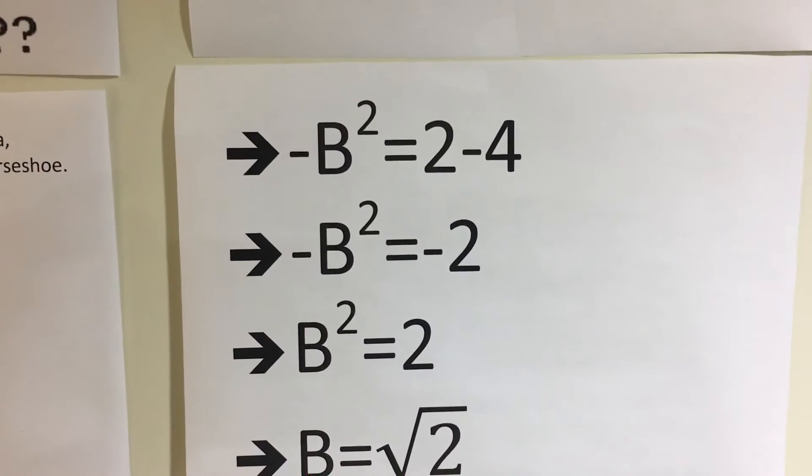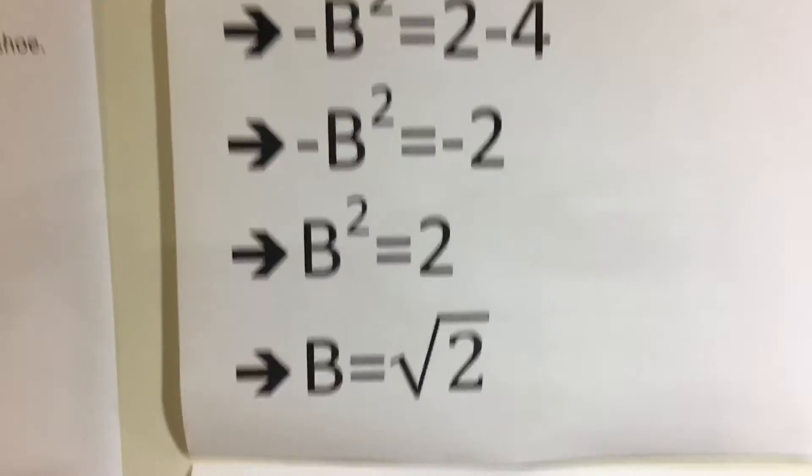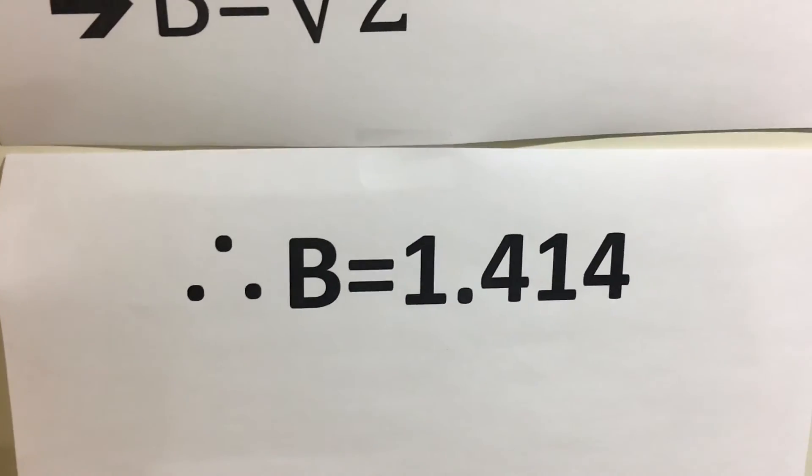Negative B squared equals negative 2. B squared equals 2. B therefore equals the square root of 2, which means B equals 1.414.